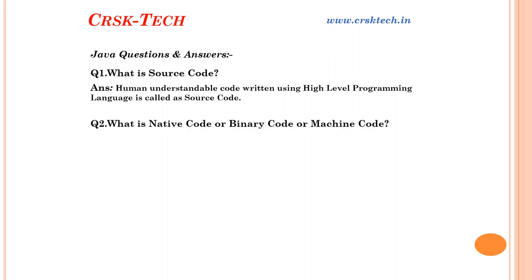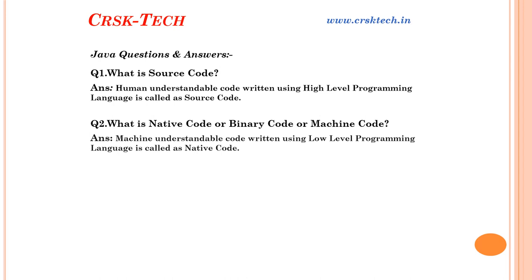Question number two: What is machine code, or we can say native code or binary code? Machine understandable code written in low-level programming language is called machine code. Machine language is a low-level programming language. The program written in machine language is called machine code. 0s and 1s are machine code. We cannot understand machine code — only the machine can understand machine code.